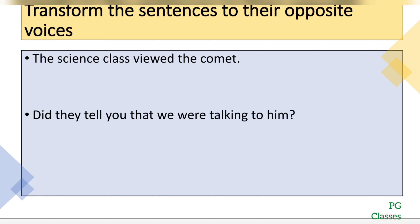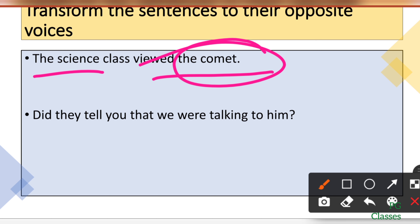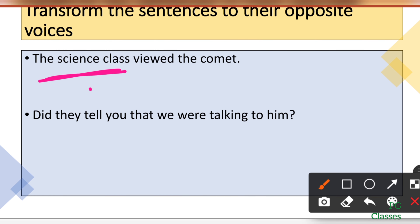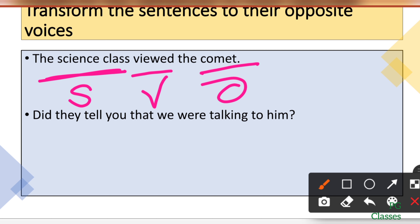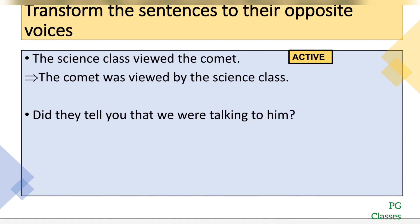First sentence: 'The science class viewed the comet.' Here, 'comet' is the object — it's what the activity is performed upon. 'The science class' is the subject, 'comet' is the object, and 'viewed' is the verb. The format is SVO, so the sentence is already active. To convert it to passive: the object comes first and the doer goes last. The correct passive sentence: 'The comet was viewed by the science class.'